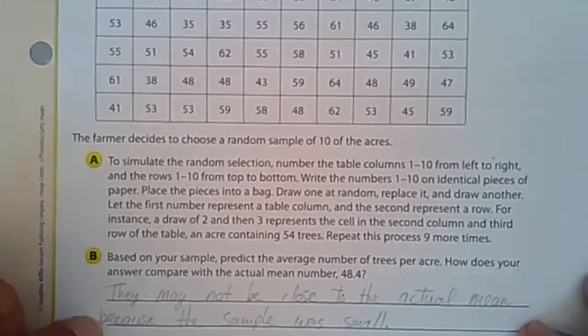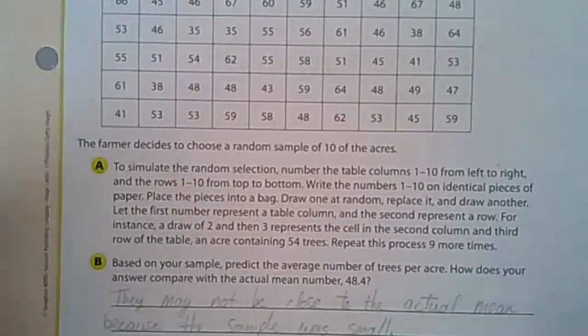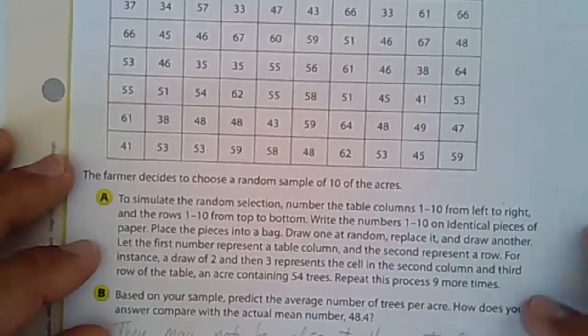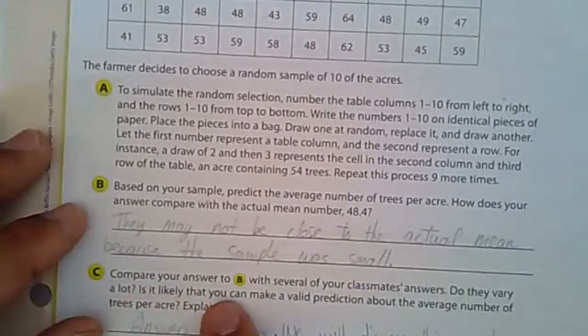If your sample gets larger and larger, instead of 10 maybe it's 20 or 30 or 50 or so, it will get closer and closer to the actual mean of 48.4.